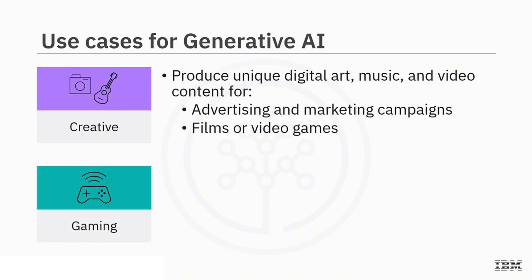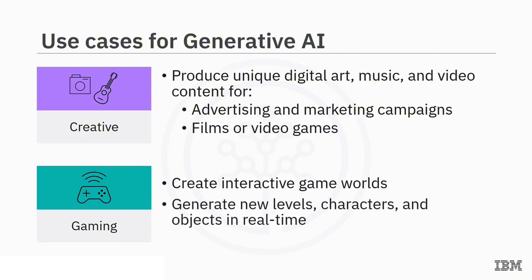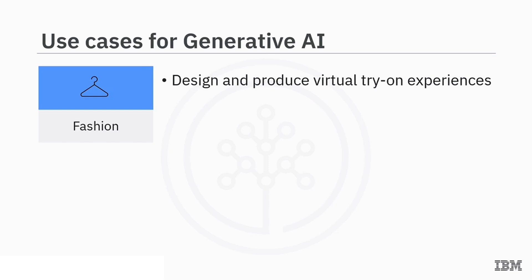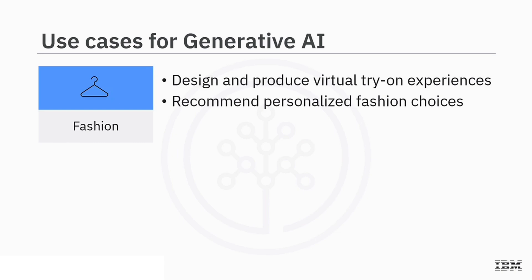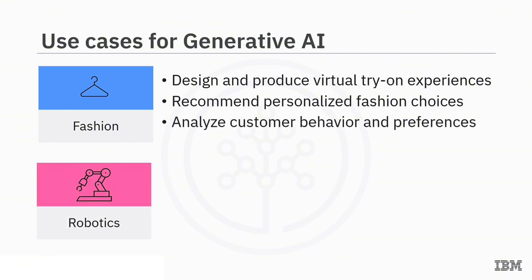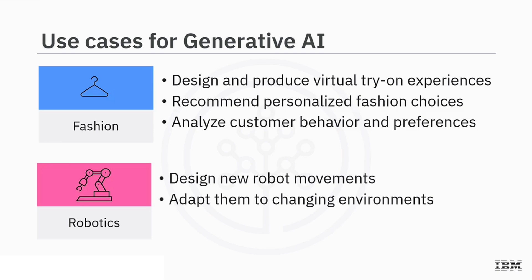In gaming, generative AI can create interactive game worlds by generating new levels, characters, and objects that adapt to player behavior. In fashion, generative AI can design and produce virtual try-on experiences for customers and recommend personalized fashion choices based on customer behavior and preferences. In robotics, generative AI can design new robot movements and adapt them to changing environments, enabling them to perform complex tasks.